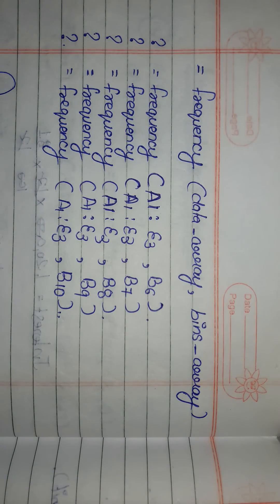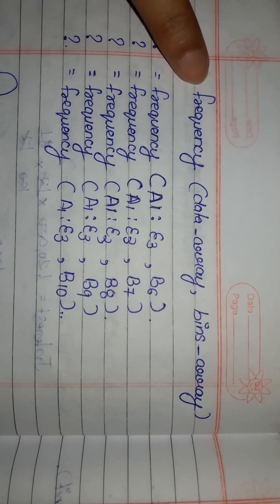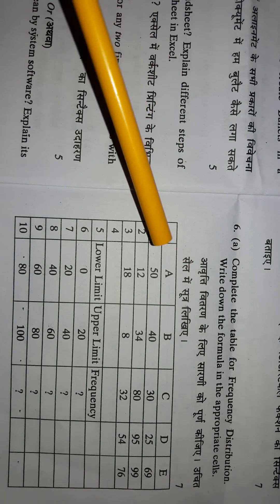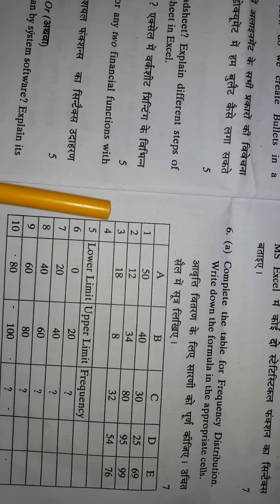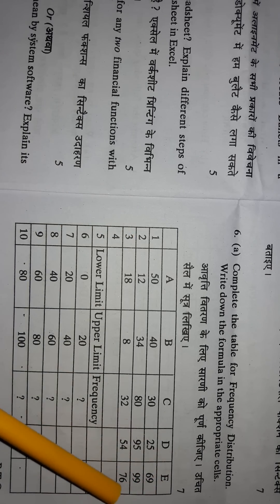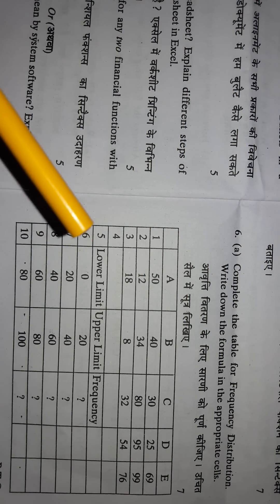When you write the answer of frequency distribution, first you will write the syntax of it. The syntax here is: =FREQUENCY(data_array, bins_array), specifically =FREQUENCY(A1:E3, B6). Now where do we get A1:E3 and B6? You can see A1 going up to E3 — starting from A1 which contains 50, up to E3. Then for the bin reference, B is there and up to 6, so B6.